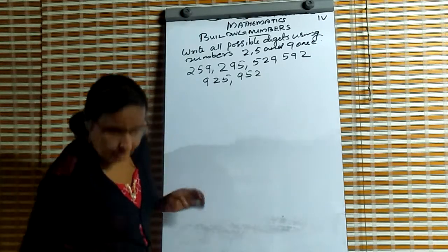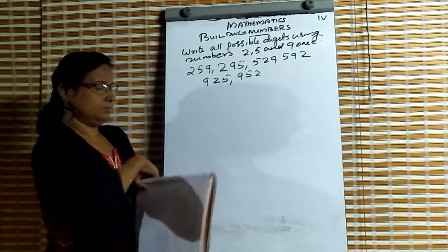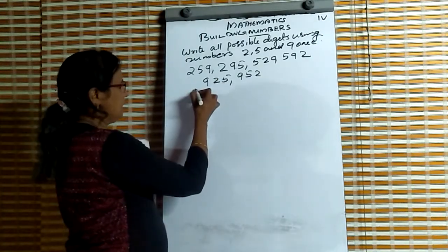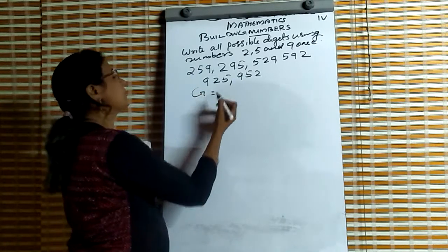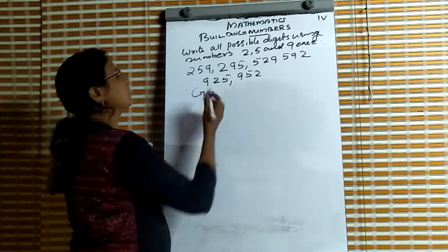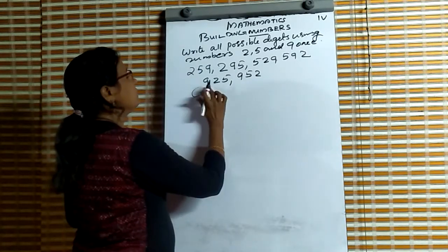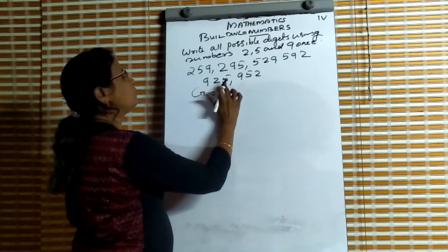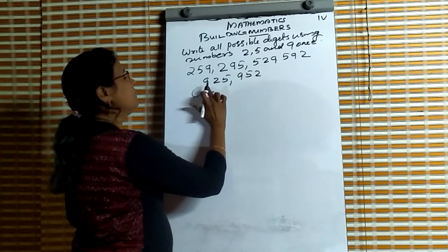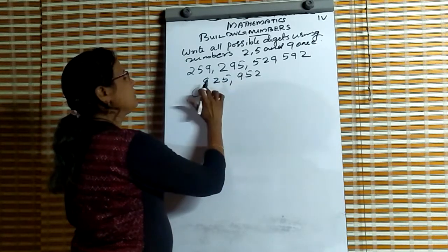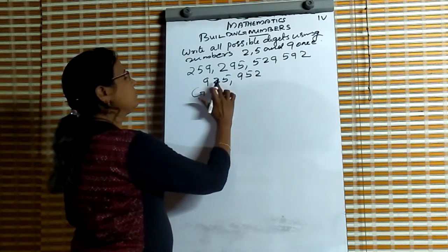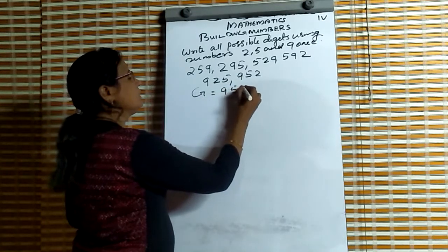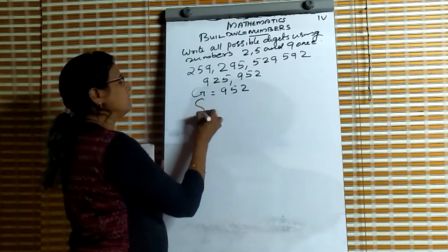Second question: which is the greatest number and smallest number? The greatest number starts from 9 — 9 is the greatest. From 925 and 952, we leave 9, and for the second digits 2 and 5, the greatest number is 952.